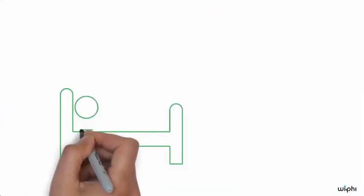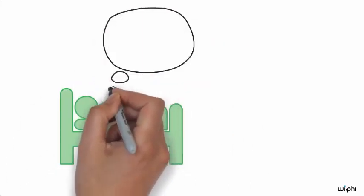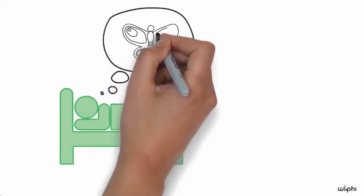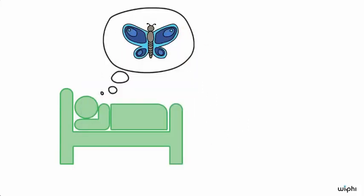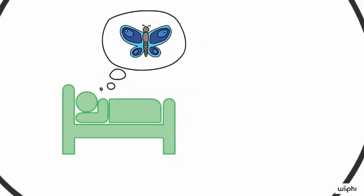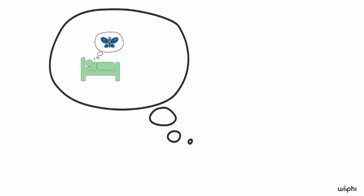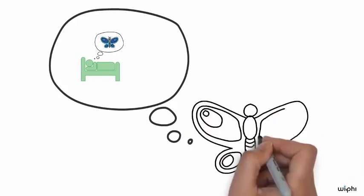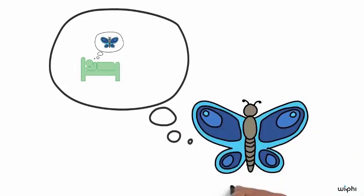The ancient Chinese philosopher Zhuang Zhou reported having dreamed that he was a butterfly and worried later that he did not know whether he was then a man dreaming he was a butterfly or whether he might now be a butterfly dreaming he was a man.